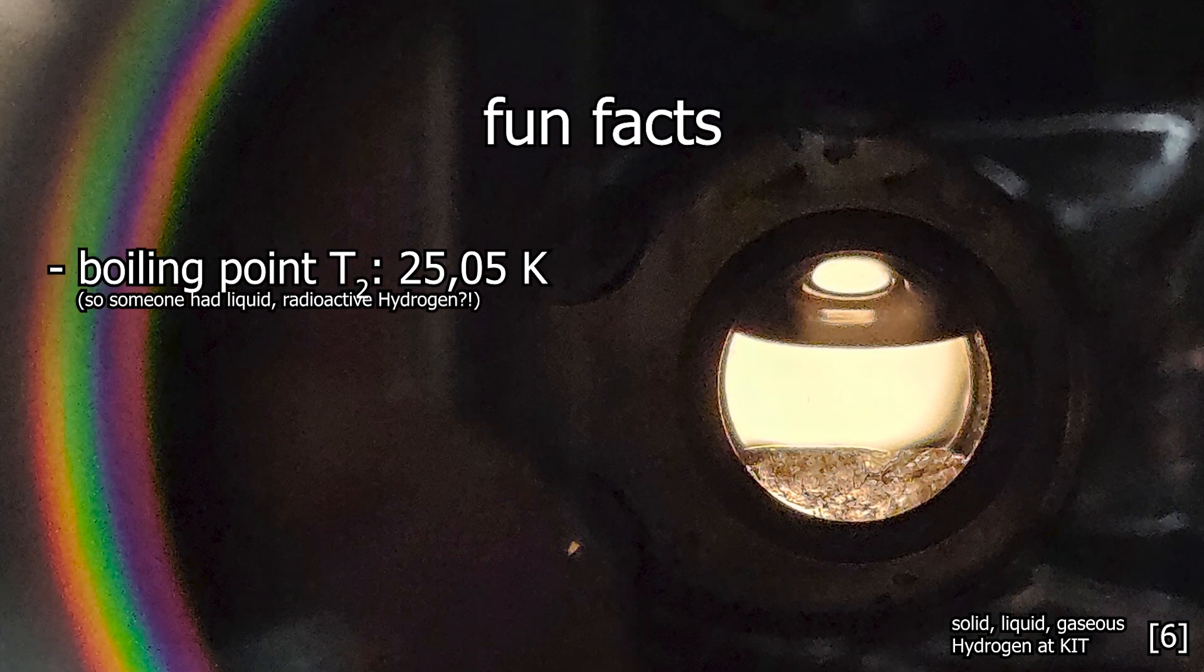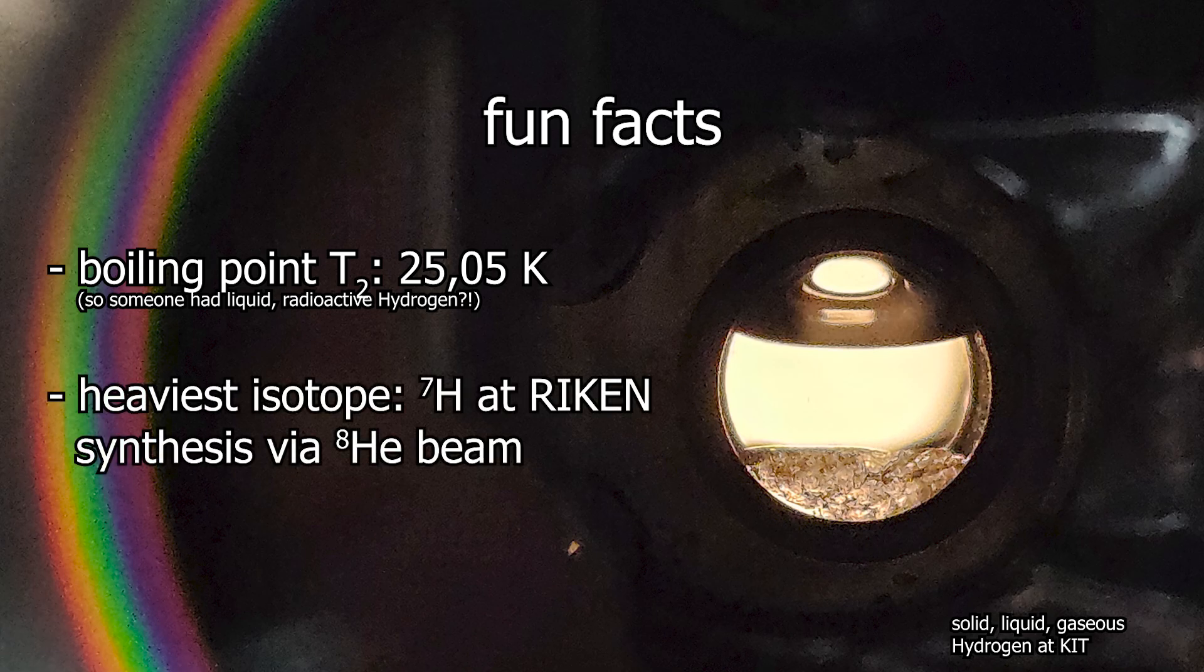Molecular tritium, so T2, has a boiling point of 25.04 Kelvin. This in itself is quite fascinating that someone had liquid tritium in their apparatus. But tritium is not the only radioactive hydrogen isotope. It goes as high as hydrogen-7, which was produced at RIKEN in Japan using a beam of helium-8.